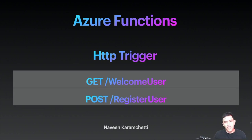Welcome to this Azure Function session. Today, we are going to use HTTP trigger to build two endpoints: one for welcoming a user and another for registering a user for a fictitious delivery company.